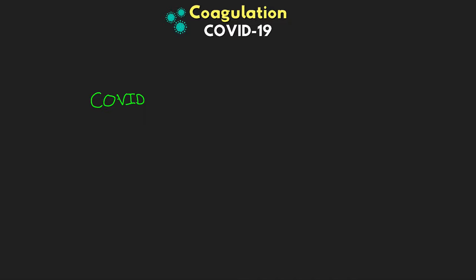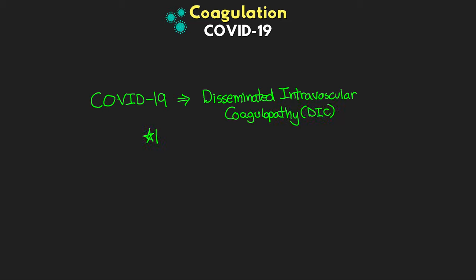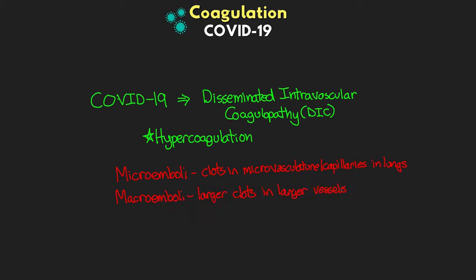When we talk about coagulation in COVID-19, one of the common things we're seeing is coagulopathies. COVID-19 can lead to a form of disseminated intravascular coagulopathy — DIC — marked by hypercoagulation. We're seeing microemboli in the microvasculature and capillaries of the lungs, as well as macroemboli — larger clots in larger vessels. These have been confirmed through autopsies showing both macroemboli and microvascular microemboli on pathology.